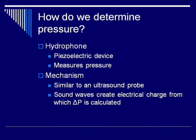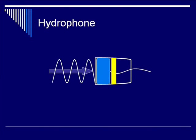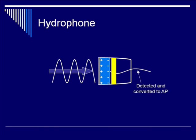So how do we determine pressure? We use a hydrophone — another piezoelectric device not unlike an ultrasound probe. The difference is that it just listens: sound waves approach the hydrophone and deform the piezoelectric crystal, which creates a charge that is detected by a receiver and calculated back out as a change in pressure.